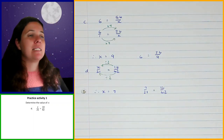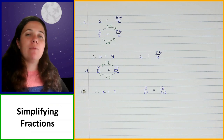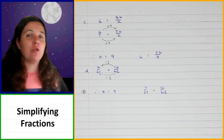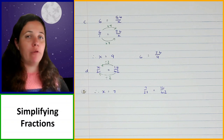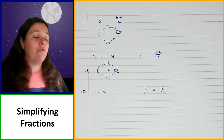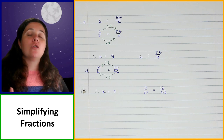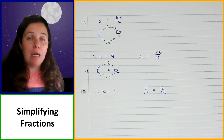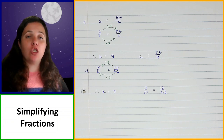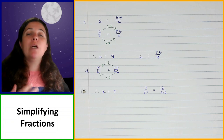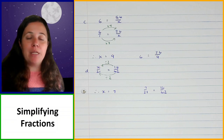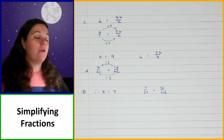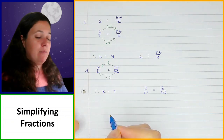Now let's have a look at simplifying fractions. When we are simplifying fractions, we're working with the same concept as equivalent fractions — we are using equivalent fractions, but we are dividing the numerator and the denominator by the same number until we can't divide them by the same number anymore, and that is how we get to the simplest form of the fraction.